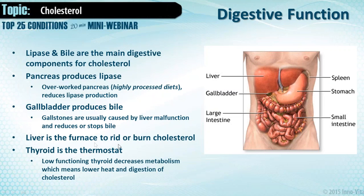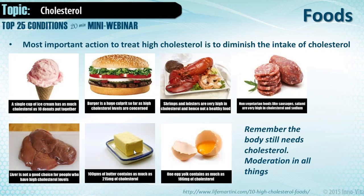The liver is the furnace to burn and rid the body of cholesterol, and the thyroid is the thermostat. When you have a low-functioning thyroid it decreases the metabolism — lowering the heat and digestion of cholesterol. We've always got to think that high cholesterol problems are also going to be a thyroid issue.